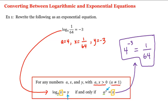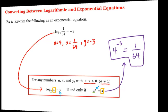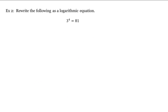And sure enough, 4 to the negative third power, we know is 1 over 64. Alright, what about going in the other direction? Let's rewrite this exponential equation as a logarithmic one.